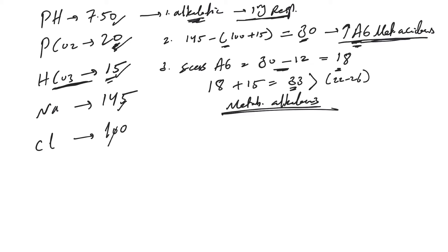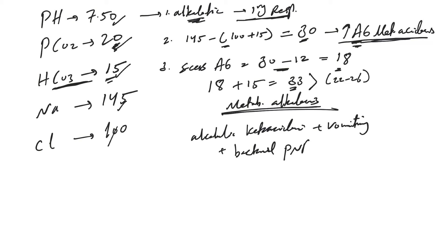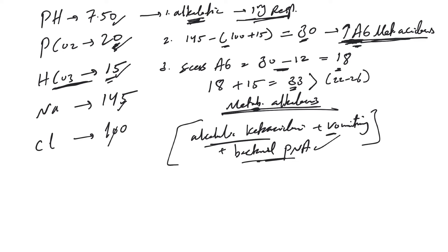This ABG was from a patient who was alcoholic, having alcoholic ketoacidosis, who was vomiting and had bacterial pneumonia. The pneumonia caused hyperventilation and respiratory alkalosis; the vomiting caused metabolic alkalosis; and the alcoholic ketoacidosis caused increased anion gap metabolic acidosis. It's important to note: you cannot have more than three acid-base disorders. For respiratory, you can only have one — either respiratory alkalosis or acidosis. For metabolic, anion gap metabolic acidosis and metabolic alkalosis can coexist, and you may also see anion gap and non-anion gap metabolic acidosis coexist.